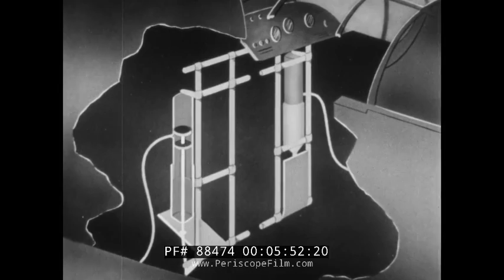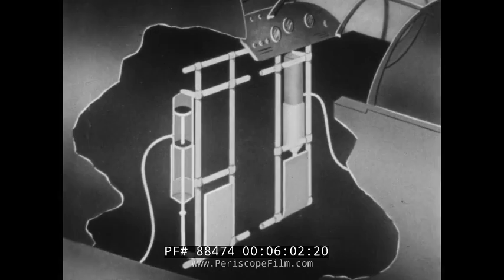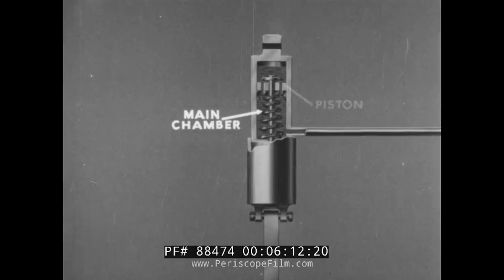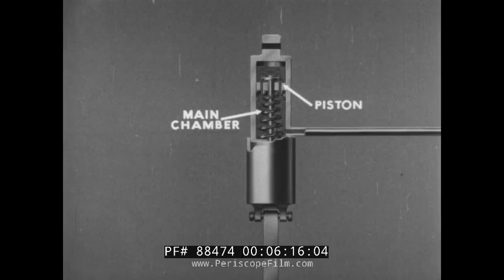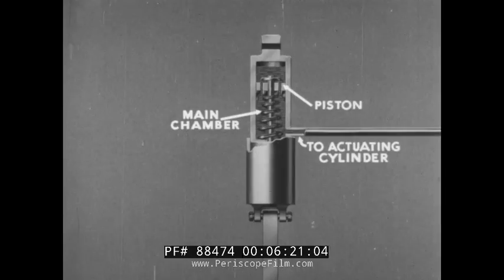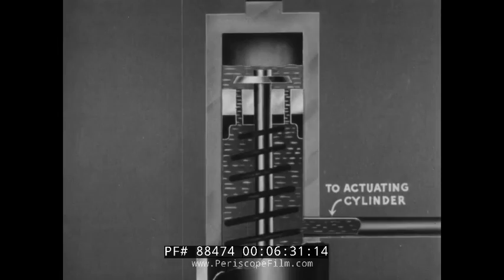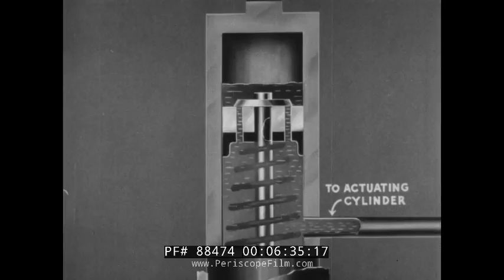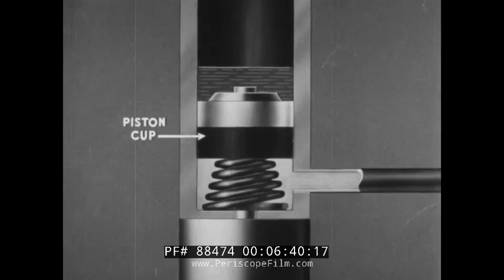Depressing the foot pedal pulls the cylinder piston down. This forces fluid through a tube to the actuating cylinder at the wheel. The amount of pressure which can be exerted on the foot pedal determines the amount of pressure built up in the master cylinder. The top half of the master cylinder contains the hydraulic fluid and the piston which moves the fluid from the cylinder through a tube to the actuating cylinder at the wheel. When the pedal is depressed, the piston moves down and forces fluid out the lower port to the actuating cylinder.